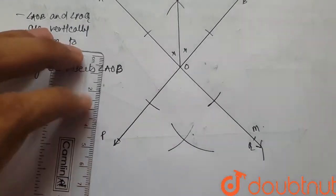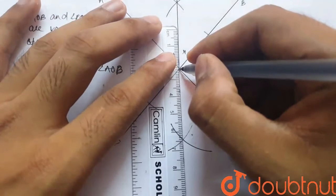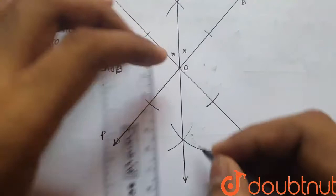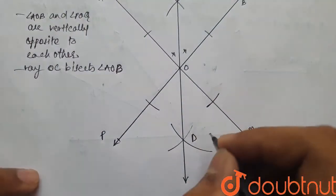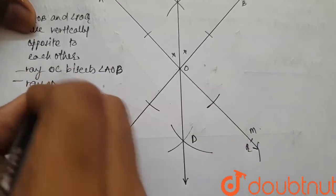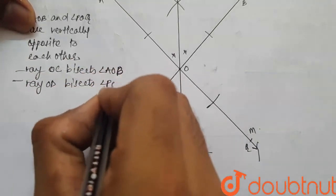And we get the angle bisector of angle POQ by joining point O and this point of intersection. And let's call this point D. We have Ray OD bisects angle POQ.